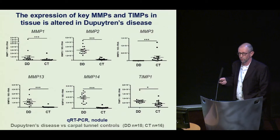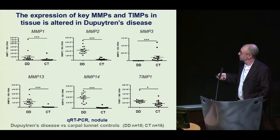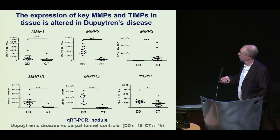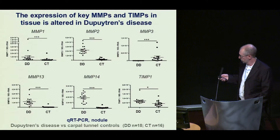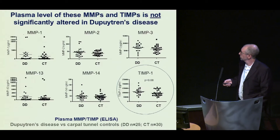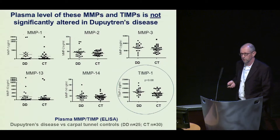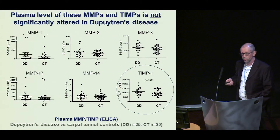First, we wanted to repeat what we'd shown previously. This is measuring gene expression in Dupuytren's disease tissue versus a carpal tunnel release palmar fascia. You can see that the genes we're interested in all change significantly between those two groups by QRT-PCR measurement. However, when you measure those proteins in the circulation, that is no longer true — the tissue isn't the only source of their production — other than for TIMP1, one of the inhibitors, which is still slightly higher in Dupuytren's disease, as has been reported before.